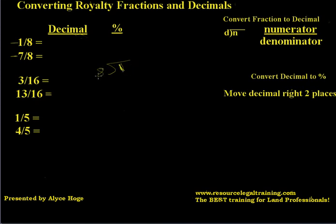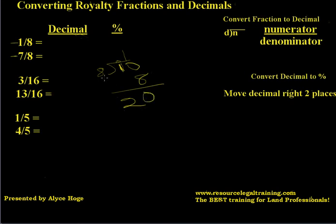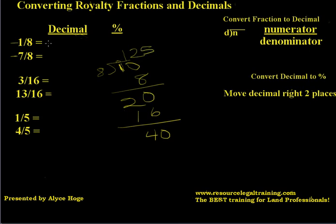So how many times does 8 go into 1? Well, it doesn't, so we're going to put our decimal up here. We're going to add a 0 here, and 8 goes into 10 one time. 1 times 8 is 8. 10 minus 8 is 2. How many times does 8 go into 2? It doesn't, so we're going to add a 0. How many times does 8 go into 20? 8 times 2 is 16, so we're going to add a 2 up here. 2 times 8 is 16. 20 minus 16 is 4. 8 cannot go into 4, so we're going to add another 0. Then 8 goes into 40 five times. So 1/8 converts to a decimal of 0.125.